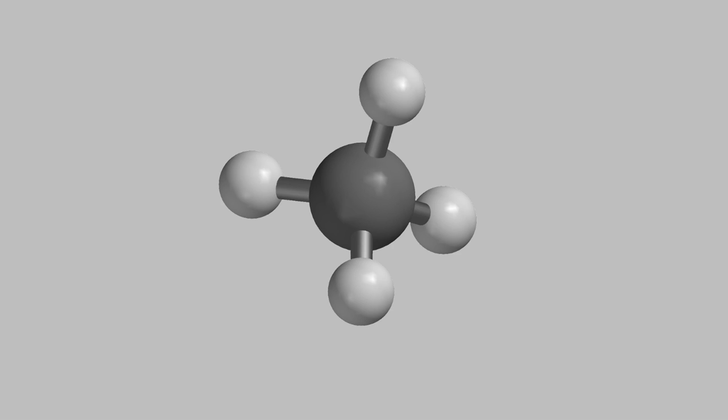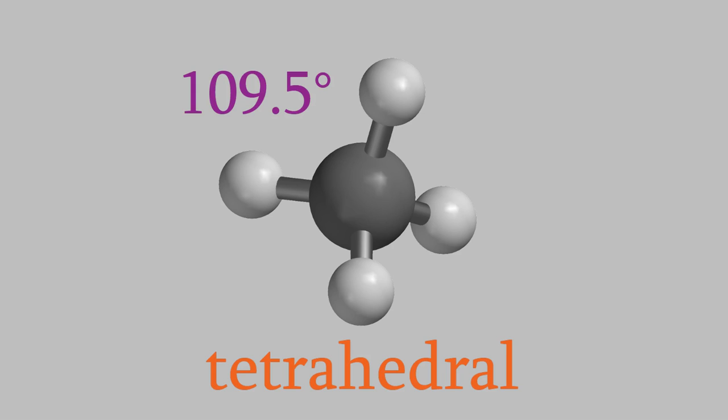We say that the shape of this molecule is tetrahedral, and the reason we get this shape instead of a square is that the angle between the bonds in this molecule is 109.5 degrees, much larger than the 90 degrees we'd get in a square.